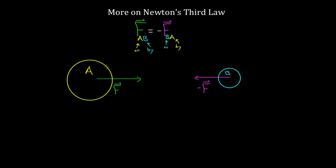And they are the same magnitude even if the two objects are not the same size — this is another misconception. If object A is a big star and this is some smaller planet orbiting that star, this planet could be millions of times less massive than this star, but it would still exert the same force. So if this star is pulling on the planet with this pink force negative F, then this planet has to be pulling on the star with this green force F, and they have to have the same magnitude even if they are different sizes.